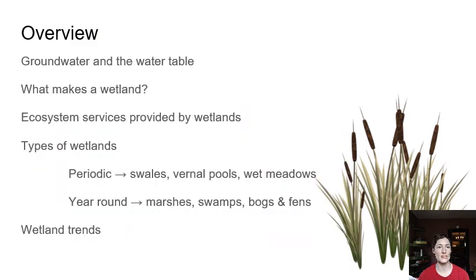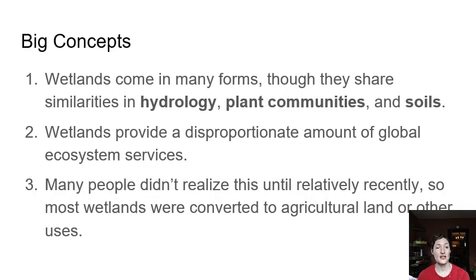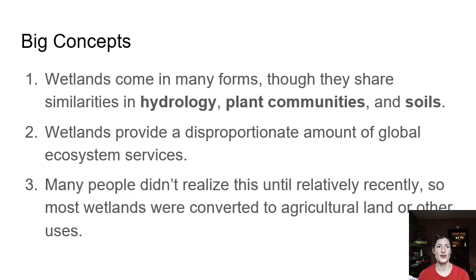In this recording we're going to be covering just what makes a wetland — thinking about groundwater, what a water table is and what that has to do with what a wetland is. Big concepts wise, wetlands come in many forms and they're going to have three big things in common, so you need to know these three things: what makes something a wetland? In the next few lectures, you'll look at the ecosystem services wetlands provide and then how we've sort of changed the trends in how we view wetlands.